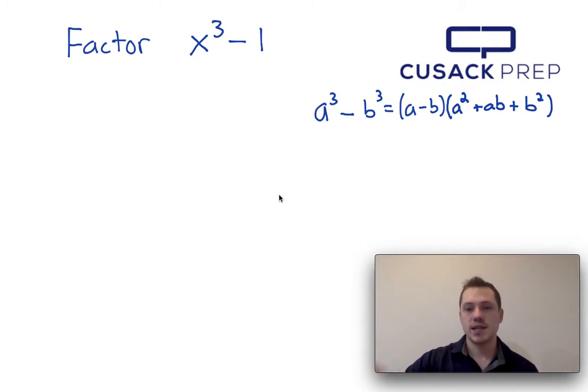Now both x cubed and 1 are perfect cubes and because we have the difference between them we can factor this using this difference of cubes formula that I have presented on the right side.